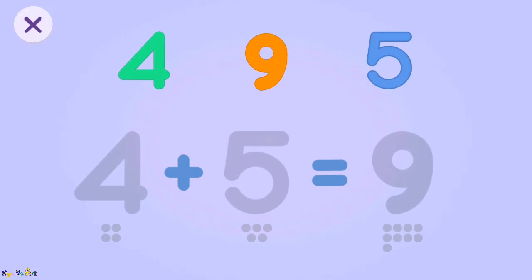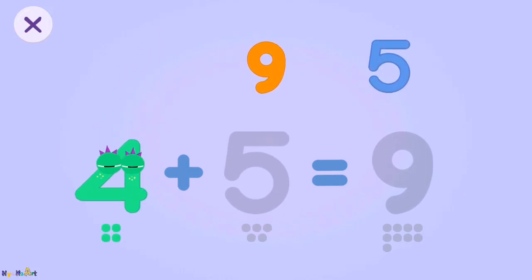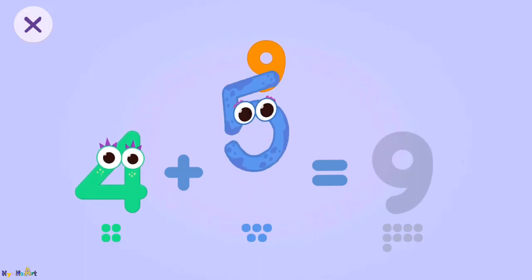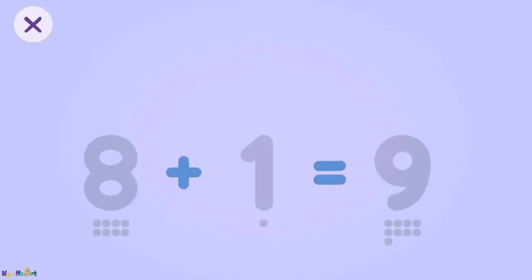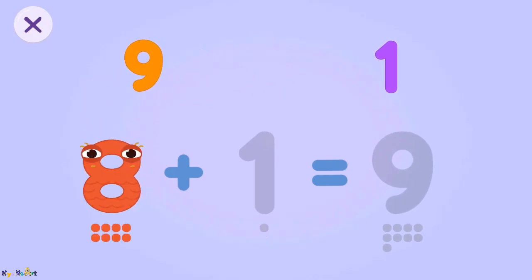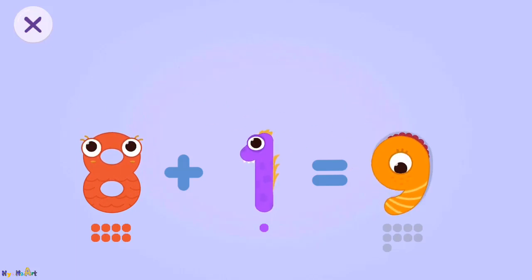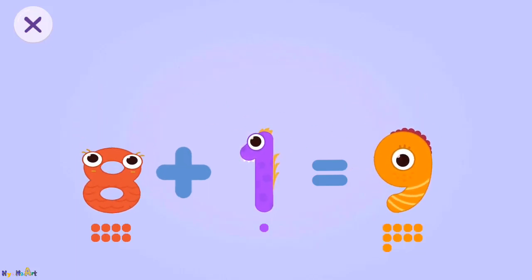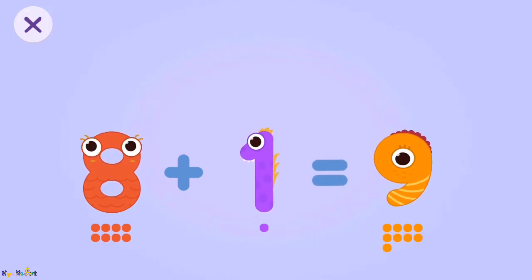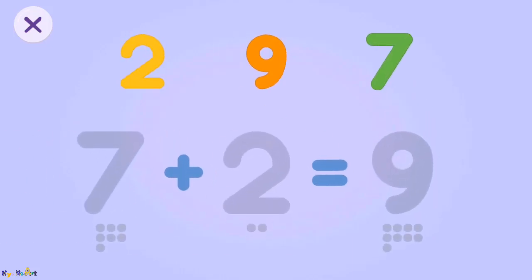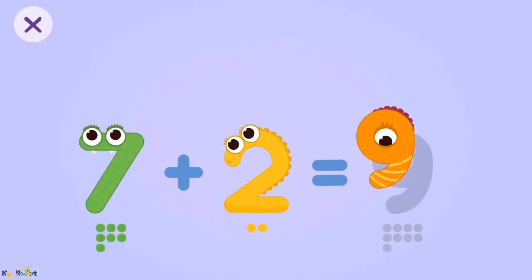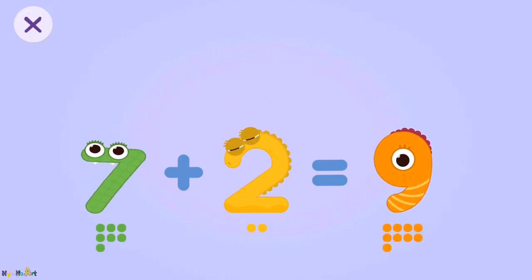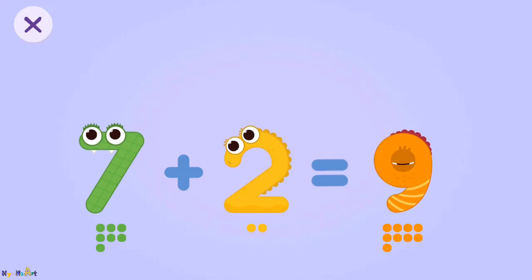Move the numbers to get the right answer. Four plus five equals nine. Eight plus one equals nine. Seven plus two equals nine.